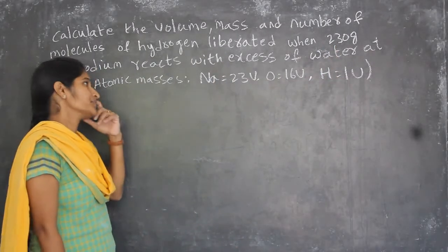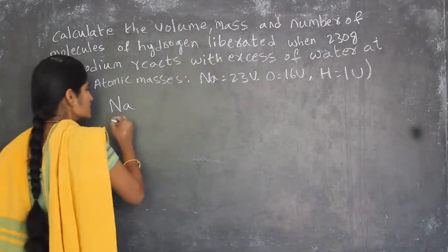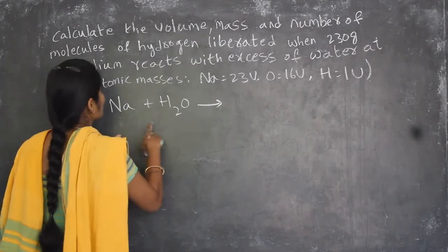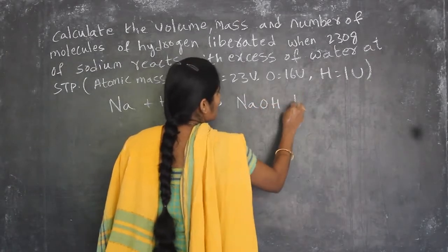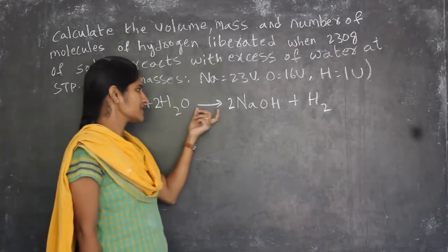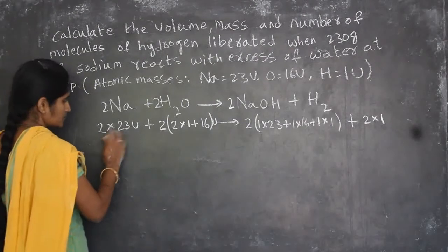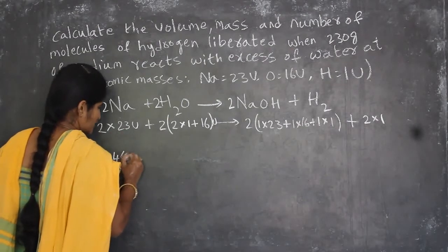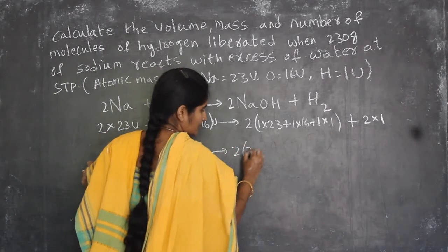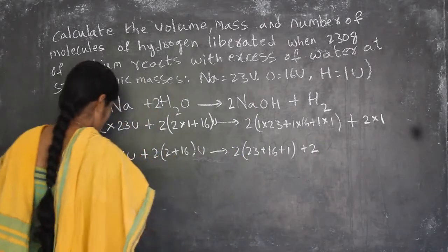The question asks: calculate the volume, mass, and number of molecules of hydrogen liberated when 230 grams of sodium reacts with excess water at STP. The equation is: sodium + water → sodium hydroxide + hydrogen gas. The balanced equation is: 2Na + 2H₂O → 2NaOH + H₂. Now finding the unified masses: 2 × 23 = 46U for Na, and 2 × 18 = 36U for water.